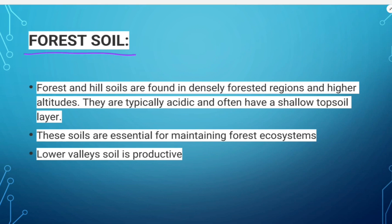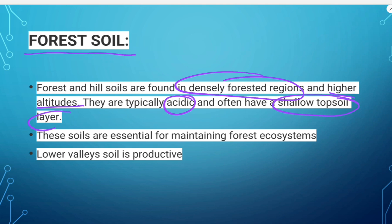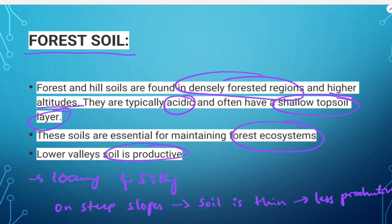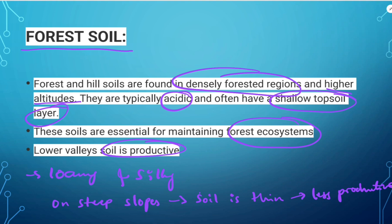Forest soil is found in dense forest regions at higher altitudes — in mountain ranges of the Himalayas, Purvanchal and Sahyadris — where sufficient rainfall is available. They are typically acidic and often have a shallow topsoil layer. These soils are essential for maintaining forest ecosystems. The soil is loamy and silty on valley sides and coarse-grained in upper slopes. Lower valley soil is fertile and productive, while steep slope soil is thin and less productive.